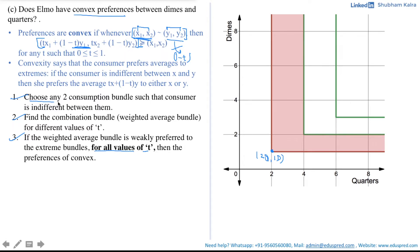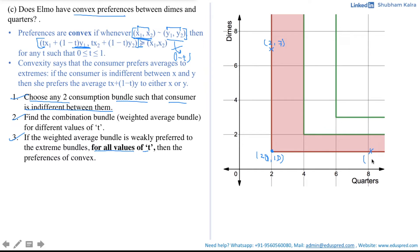For the first step, let's choose two consumption bundles from the indifference band so that Elmo is indifferent between them. Let me choose approximately (2, 7) — where Elmo has 2 quarters and 7 dimes — and (8, 1) — where Elmo has 8 quarters and 1 dime. Since both belong to the indifference band, Elmo is indifferent between them.